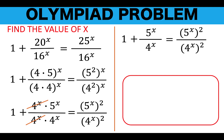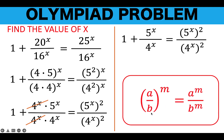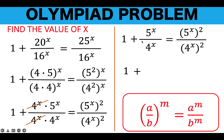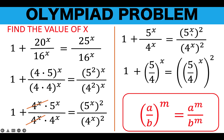Now let's recall another law of exponents. When we have a fraction a over b raised to an exponent n, that equals the numerator raised to n over the denominator raised to n. We use the converse of this rule to write 5 raised to x over 4 raised to x as a fraction raised to an exponent. So we copy 1, and 5 raised to x over 4 raised to x is now written as 5 over 4 all raised to x. Applying the same property to the right side, 5 raised to x over 4 raised to x becomes 5 over 4 raised to x, with the exponent 2 outside.